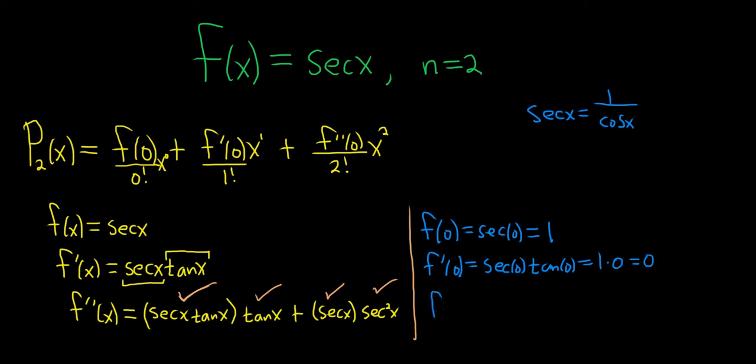And then f double prime of 0 is equal to, let's see, so we have all of this. Well, tangent of 0 is 0. When you plug in 0 here, you'll get tangent of 0, which is 0. So this is just 0 plus, and then here you're going to get secant of 0 times the secant squared of 0. So those are all 1's. So you just get 1.